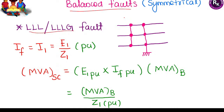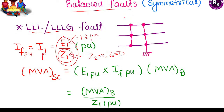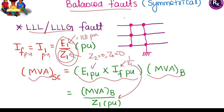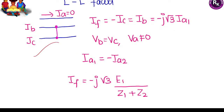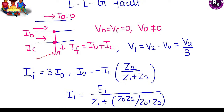For balanced (symmetrical) fault: only positive sequence component exists; negative and zero sequence components are zero. Pre-fault voltage is 1 ∠0° per unit. Fault current (positive sequence current) equals pre-fault voltage divided by positive sequence impedance. Short circuit MVA = per-unit fault current × base MVA = (1/Z1) × base MVA. For unsymmetrical faults: pause and note the boundary conditions for line-to-ground fault, line-to-line fault, and double-line-to-ground fault — all conditions are written in detail.